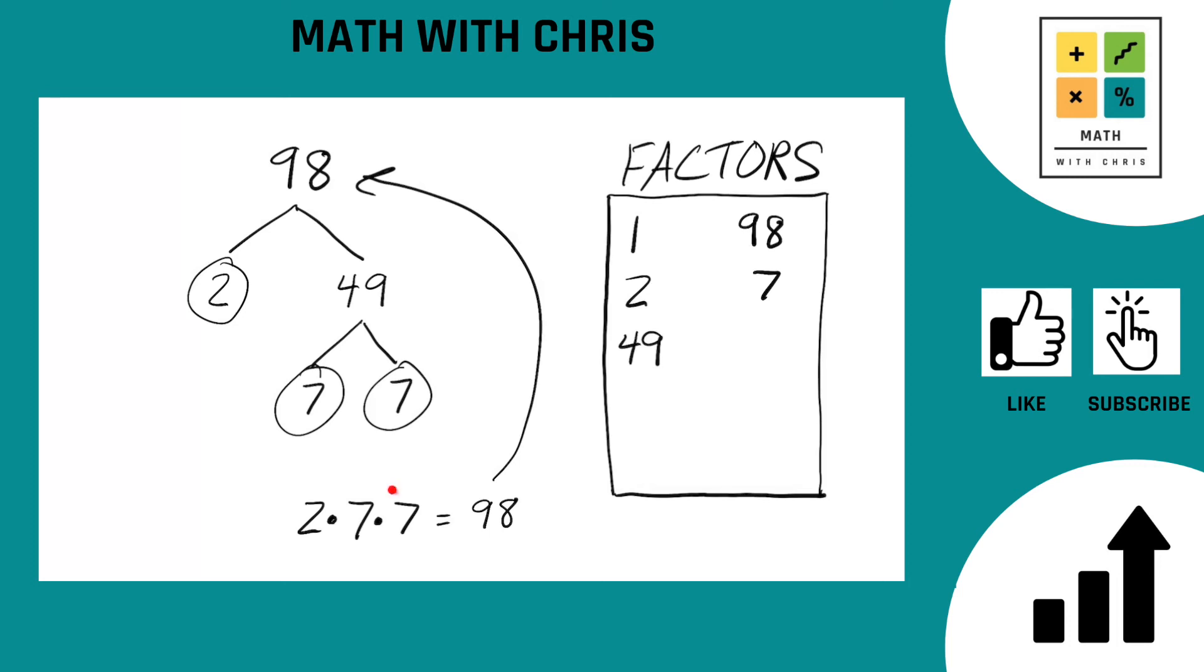And now we come down here and look at the prime factors. Any combination of these numbers that you can multiply together to give you a new number not in the bank. How about two times seven? Two times seven is 14. We don't have 14 yet. Add 14 to the mix.